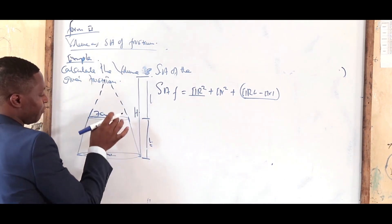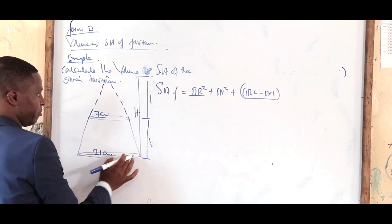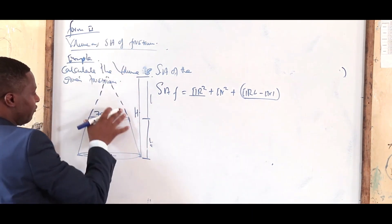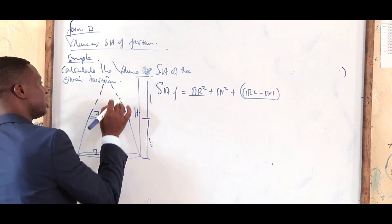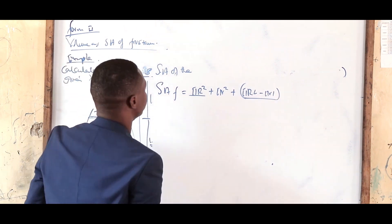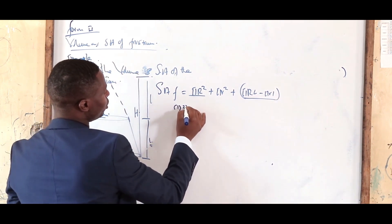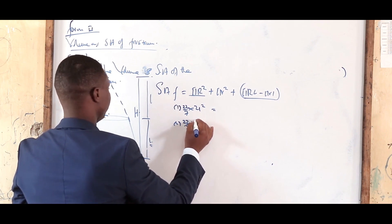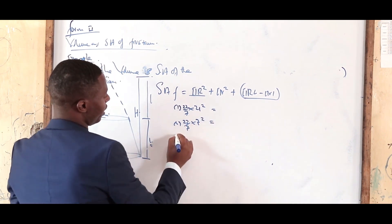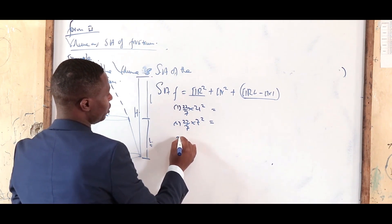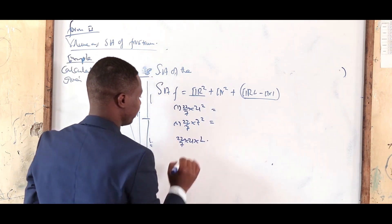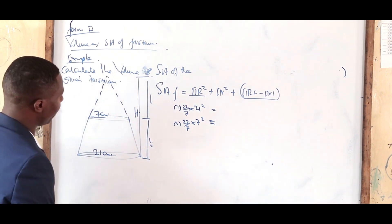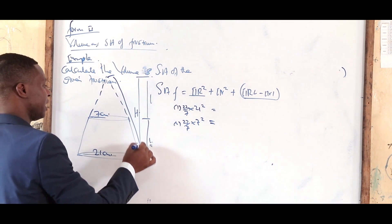You have the lower circular part (πR²), the upper circular part (πr²), and the curved surface, which equals the whole curved surface minus the curved surface of the upper cone (πRL − πrl). But we don't have L, the slant height, so we need to calculate it.